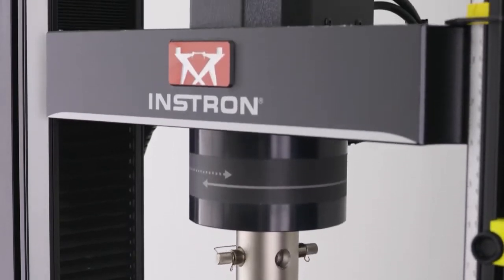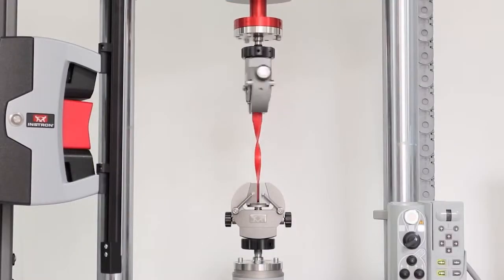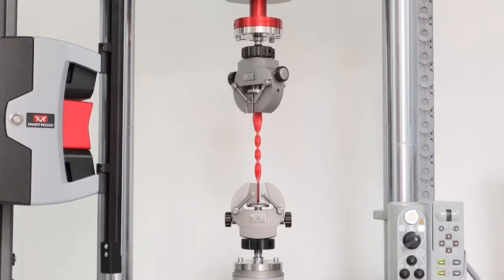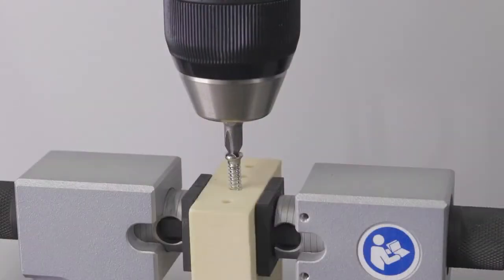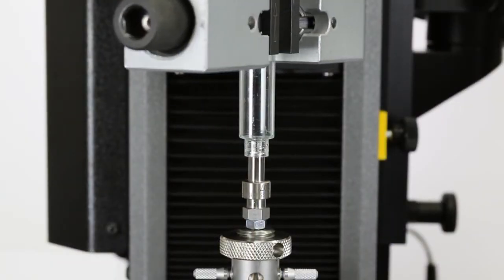Torsion testing is a form of mechanical testing that can be performed on a universal testing machine or a dynamic fatigue testing system. Product manufacturers use torsion testing to determine the shear properties of materials or objects when torque is applied.